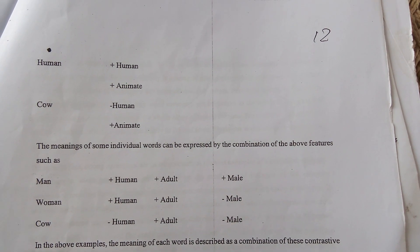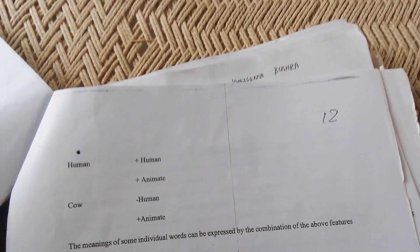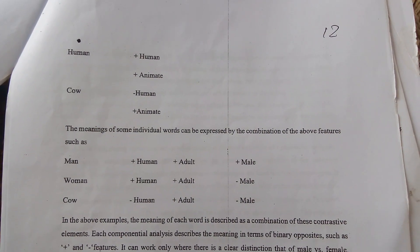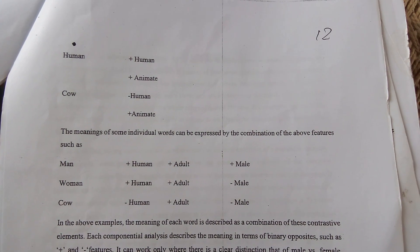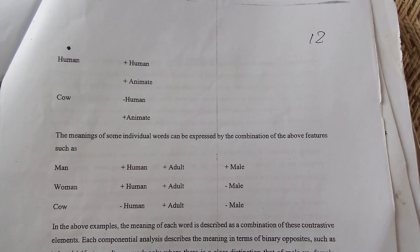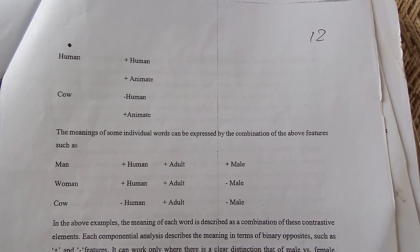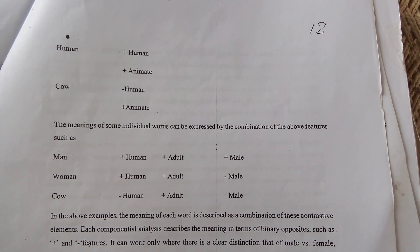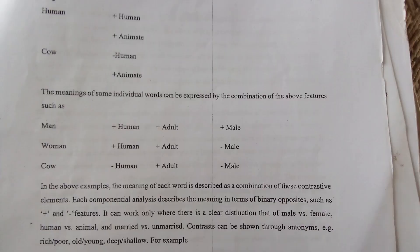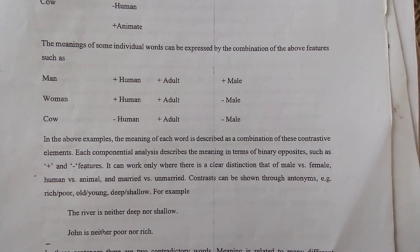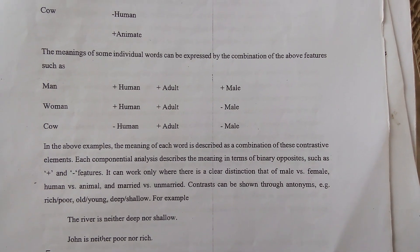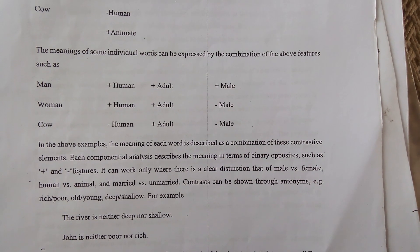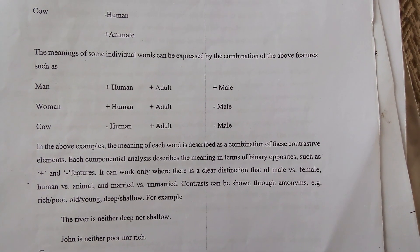The meanings of individual words can be expressed by the combination of features: man is [+human, +adult, +male]; woman is [+human, +adult, −male] — meaning woman does not have male features; cow is [−human, +adult, −male]. In these examples the meaning of each word is described as a combination of constructive elements, and each componential analysis describes meaning in terms of binary opposites such as plus and minus features.